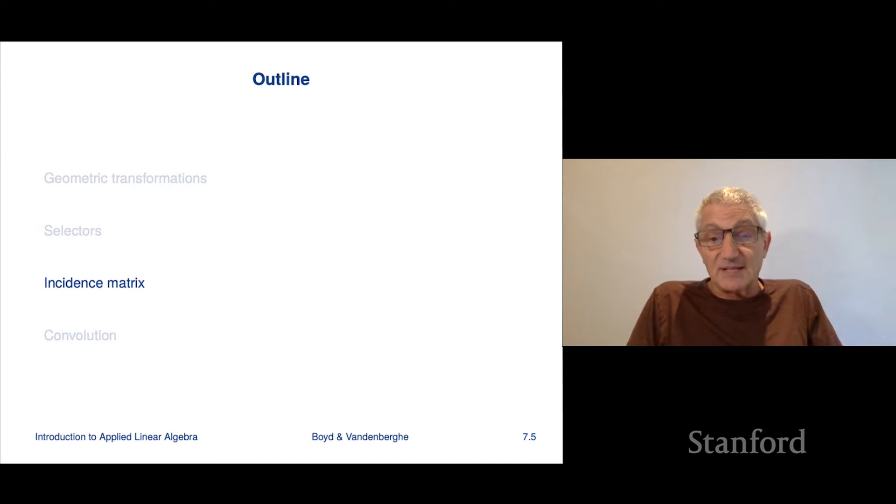We're now going to look at another matrix that comes up very frequently. It's the incidence matrix associated with a graph. This comes up in a ton of fields, so we'll look at the basics now.